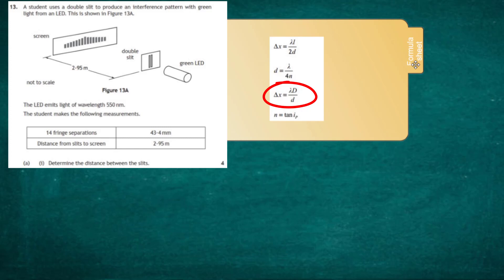We have to rearrange it to find what d is. If you're not quite sure of that expression, you should know how it's been derived. We'll write it down first: delta x equals lambda capital D divided by small d.